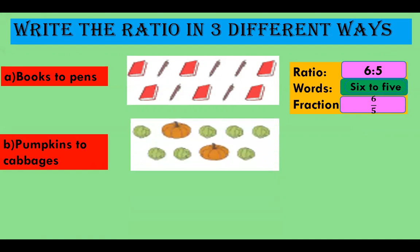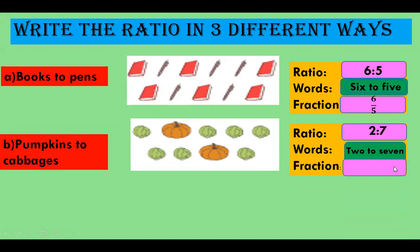Pumpkins to cabbages. First find the ratio, then words, and then fraction. The ratio is 2 is to 7. In words we call it 2 to 7 and the fraction is 2 by 7.